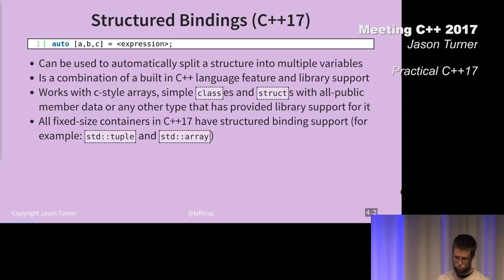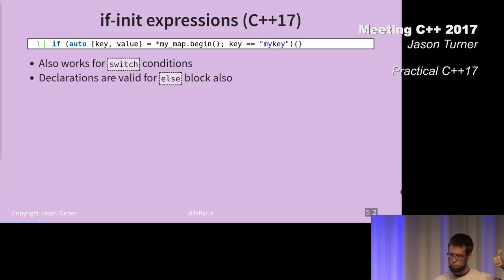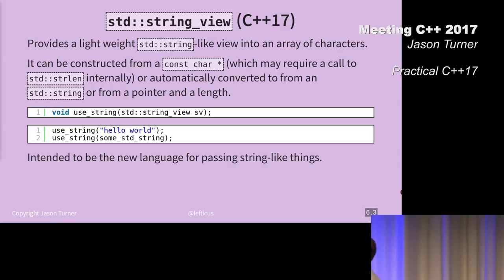String view is also added in the standard library. It is a lightweight wrapper around string like things. It gives an interface similar to standard string and can be constructed from a const char star, which may require a call to standard string length underneath the covers to actually calculate the length of the string. The string view is a pointer with a length effectively. You can also create it from a standard string.